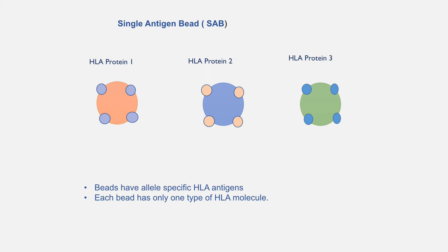The third type of beads are called single antigen beads. These beads have one type of HLA antigen on their surface, and these antigens are allele-specific, potentially differing by only one amino acid. So each bead has only one type of HLA molecule. When we add these beads to recipient serum, this gives us a complete description of the HLA antibody profile of the recipient. This method is routinely used in many centers as a necessary test before kidney transplant.